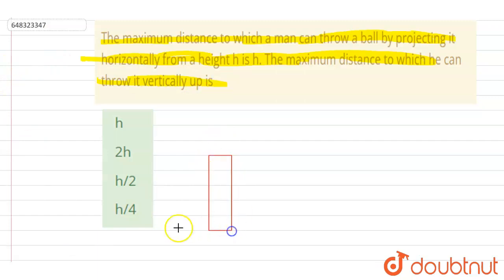And the man throws a ball horizontally with some velocity u like this, and it is given that it travels a distance h in horizontal direction like this. This is h and this is also h.